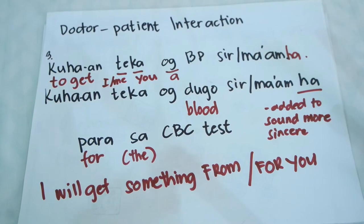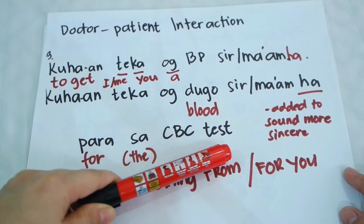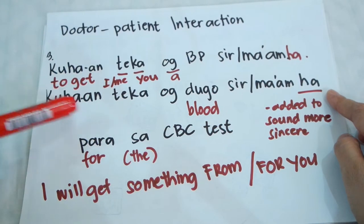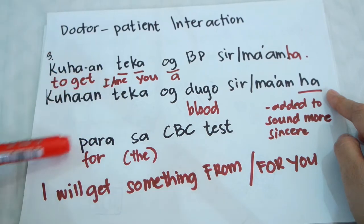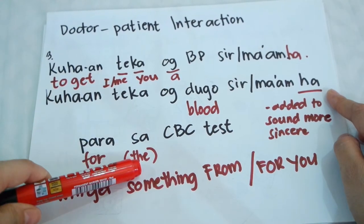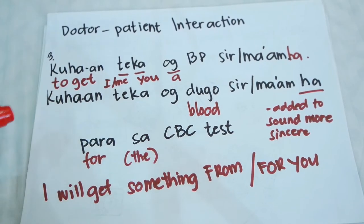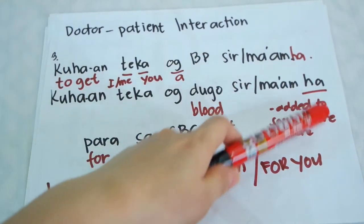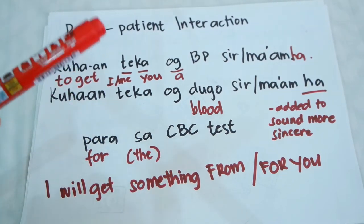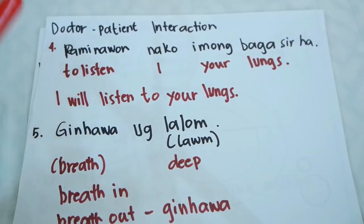Next: 'kuhaan tika og dugo, sir, ha? Para sa CBC test.' 'Dugo' means blood. You can stop at 'kuhaan tika og dugo, sir, ha' — meaning 'I will get your blood' — or add 'para sa CBC test' to explain why. 'Para' means for. 'Sa' here means the. So: 'I will get your blood for the CBC test.' This informs the patient you are drawing blood for a complete blood count.